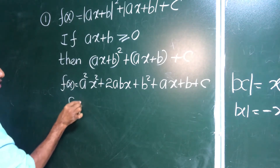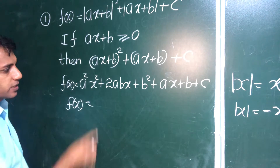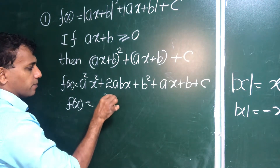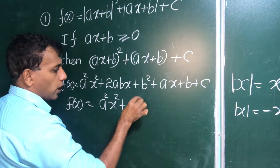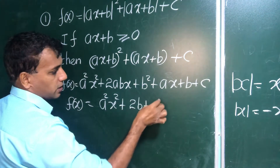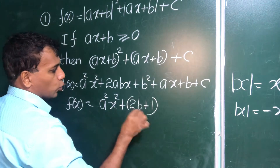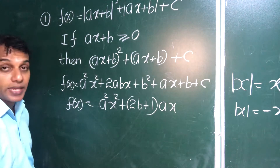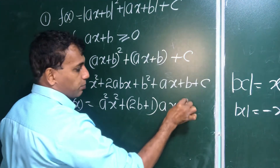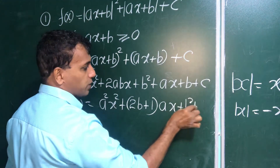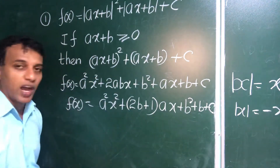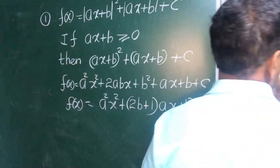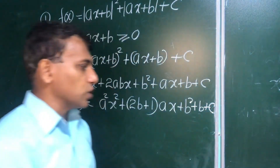Rearranging this function f(x) into quadratic pattern, we get x squared terms, then taking the x coefficient as (2ab + ax), giving (2b + 1)a·x, and the constant part is b squared plus b plus c. This is a quadratic function; set it to zero to get a quadratic equation.